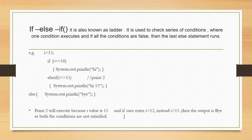The next part is if-else-if, also known as a ladder. It is used to check a series of conditions. If one condition is satisfied it executes, and if all conditions are false then the last else statement runs. Example: i = 15; if (i == 10) println("hi"); else if (i == 15) println("hi 15"); else println("bye"). Since i is 15, it prints 'hi 15'. If i were 12, neither condition would be satisfied and 'bye' would be printed.